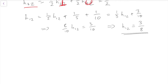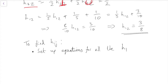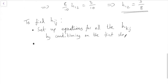So the process is: condition on the first step to find equations, then solve those simultaneous equations. To find h_iJ, set up equations for all hitting times to J — not just the h_iJ you want, but all the others as well — by conditioning on the first step. Then solve the equations, which are normally simultaneous equations.